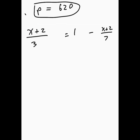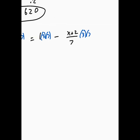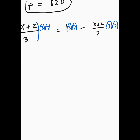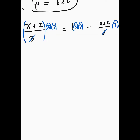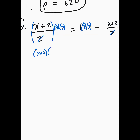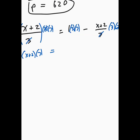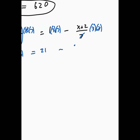So take each term times 3 times 7 and then cancel to simplify. This 3 crosses out with that 3, this 7 crosses out with that 7. And then the only thing left is x plus 2 times 7, which equals 1 times 3 times 7, which is 21 minus — and this one needs to be in parentheses — x plus 2 times 3. Now I have to distribute the parentheses.